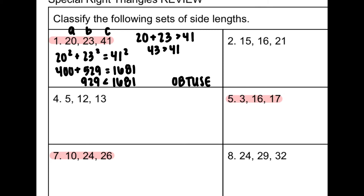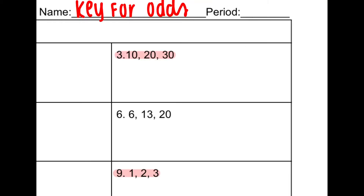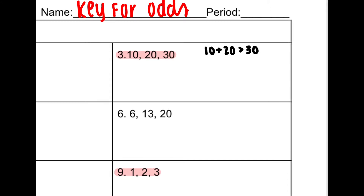So here I'm looking to see if it's a triangle first, and then I want to classify it as acute, obtuse, or right. Number three is similar. I take my two smallest, 10 and 20, add them together, and need to see if they're greater than 30. So 10 plus 20 gives me 30. Since 30 is not greater than 30, these don't even make a triangle. I put 'not a triangle' and don't go any farther.